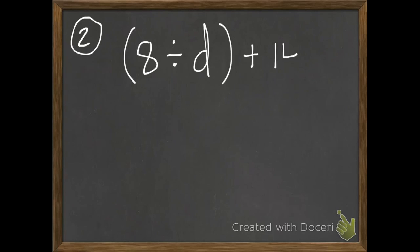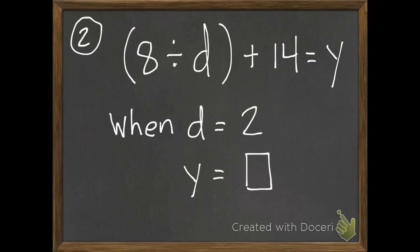Number 2. 8 divided by d in parentheses plus 14 equals y. So when d equals 2, what does y equal?